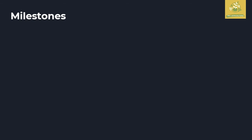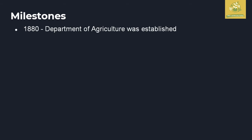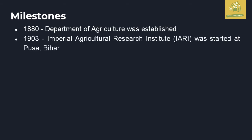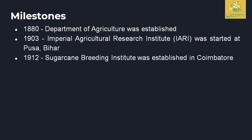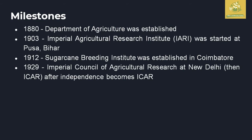Looking at milestones in agriculture: in 1880 the Department of Agriculture was created. In 1903, IARA — now known as ICAR (Indian Council of Agricultural Research) — was created as the Imperial Agricultural Research Institute, started at Pusa, Bihar. In 1912, the Sugarcane Breeding Institute was established at Coimbatore. In 1929, the Imperial Council of Agricultural Research was set up at New Delhi, later converted to ICAR after independence.